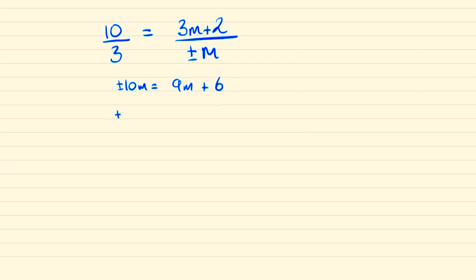And solving this for the case when this is plus 10m we arrive at m is equal to 6. Solving this for the case when it's minus 10 we have that minus 19m is equal to 6 and therefore m is equal to minus 6 over 19. And so these are the two possible values of m that form an arithmetic progression for our roots.